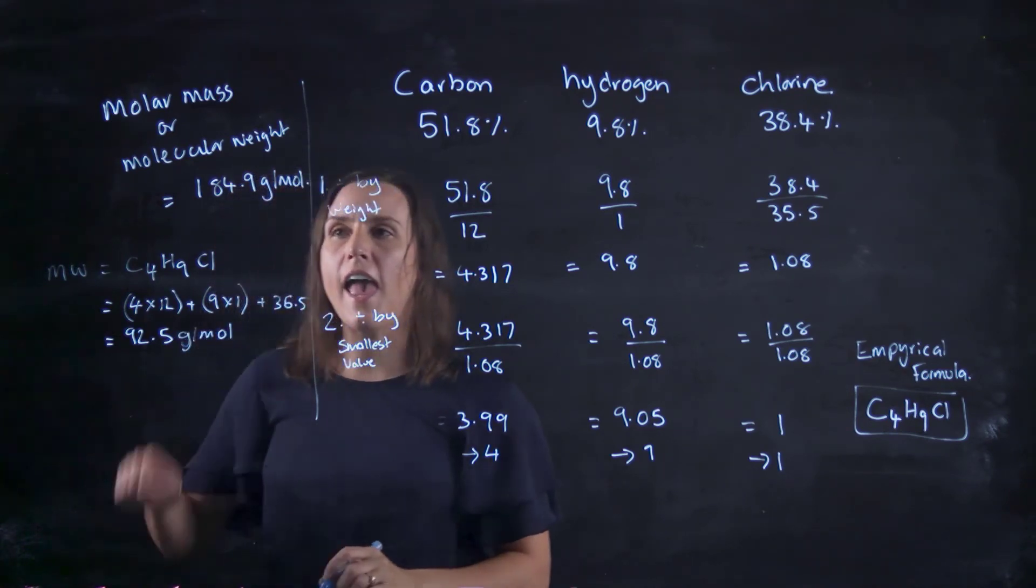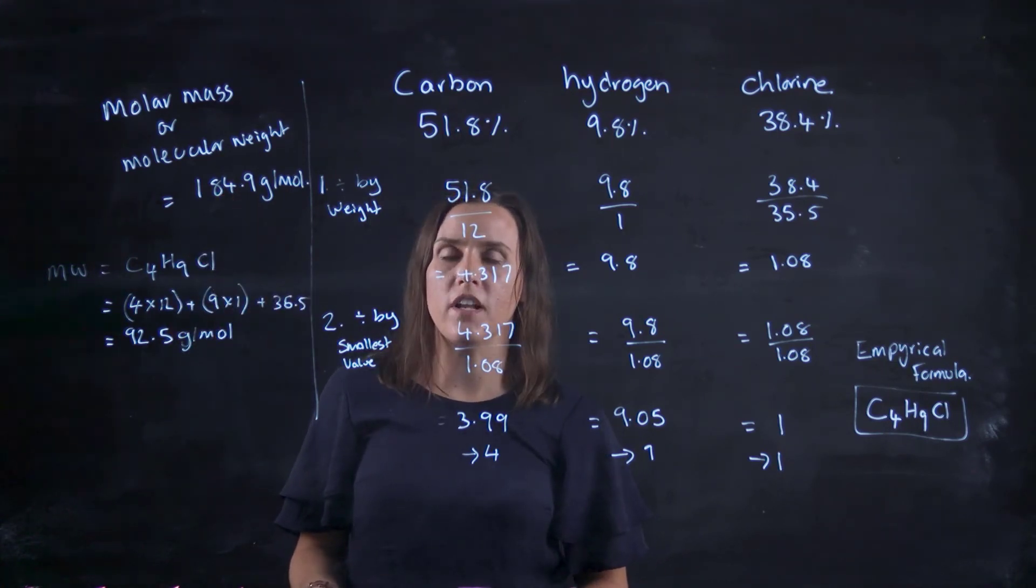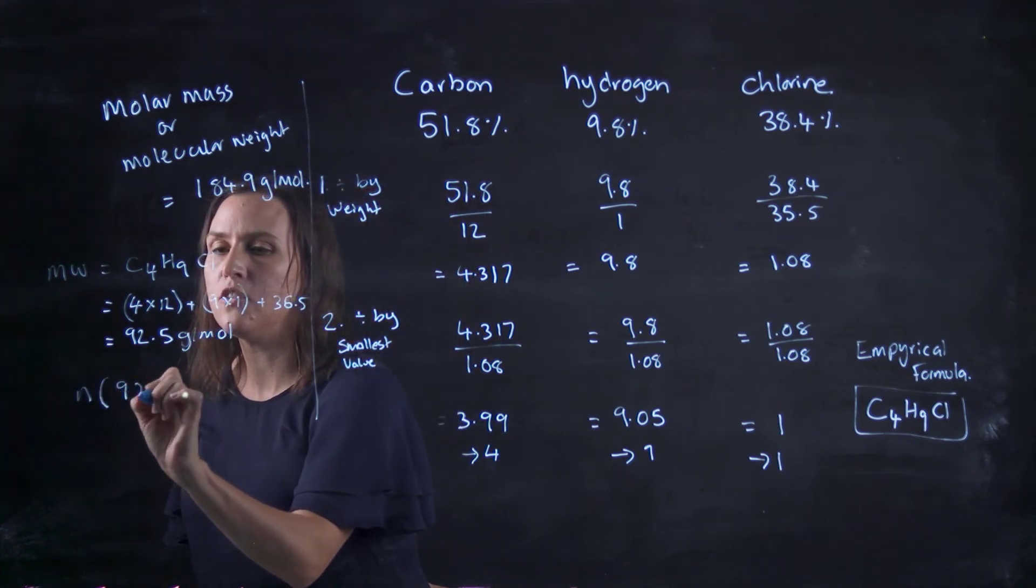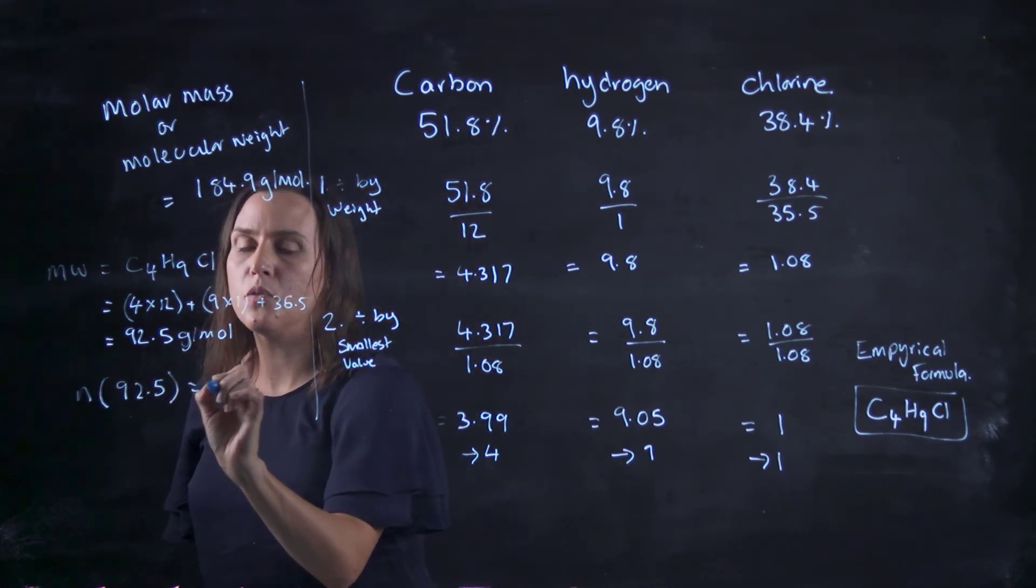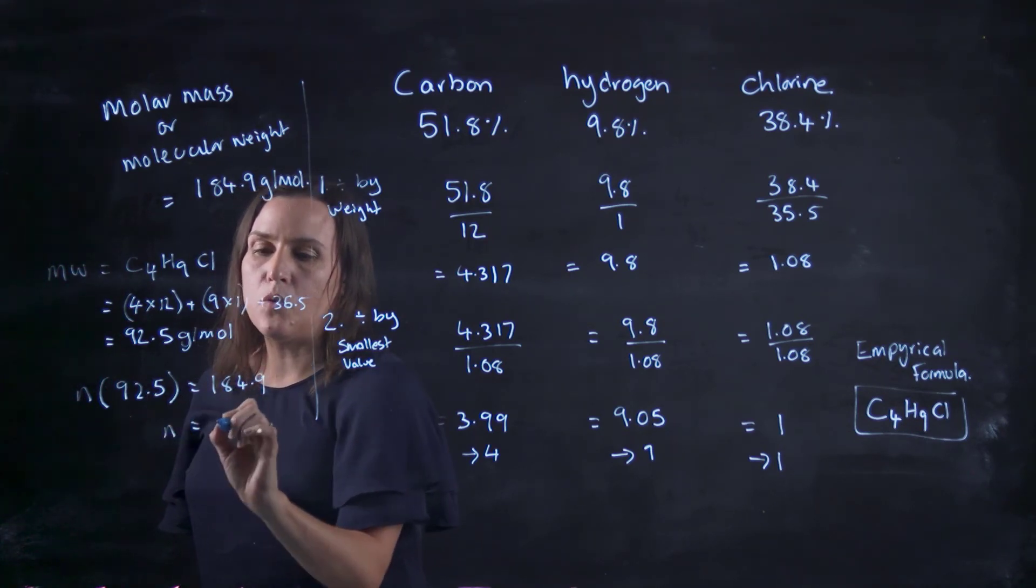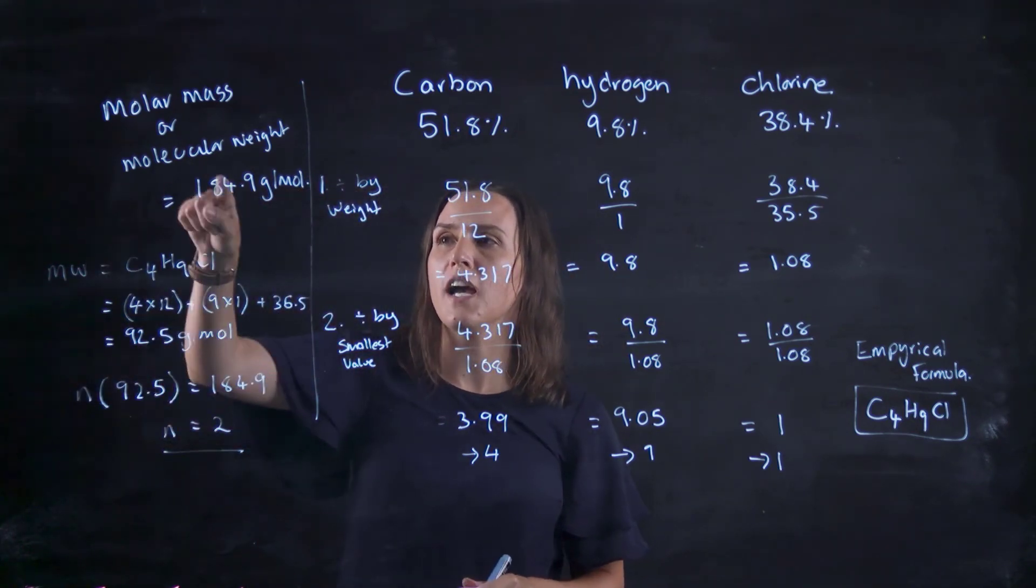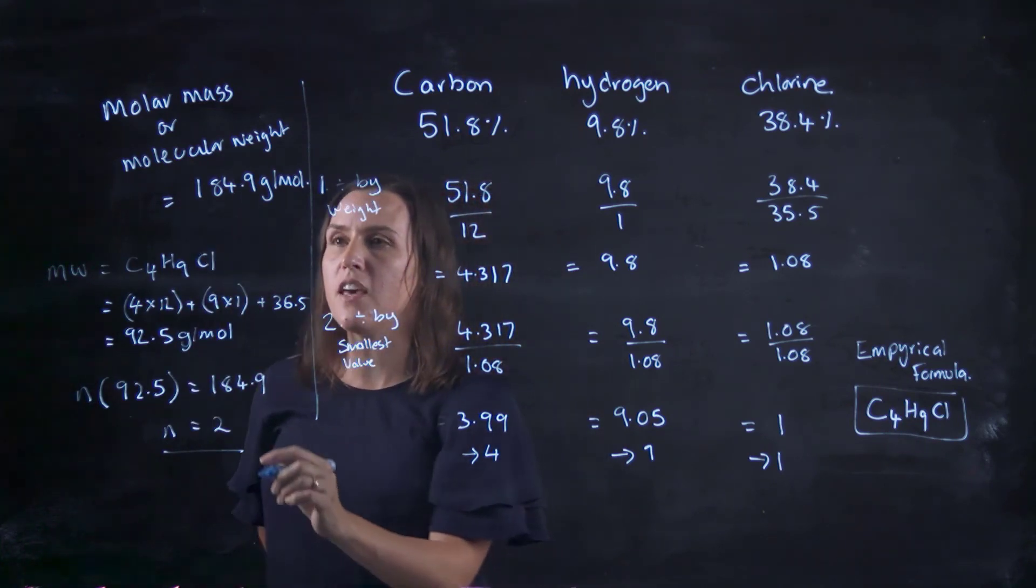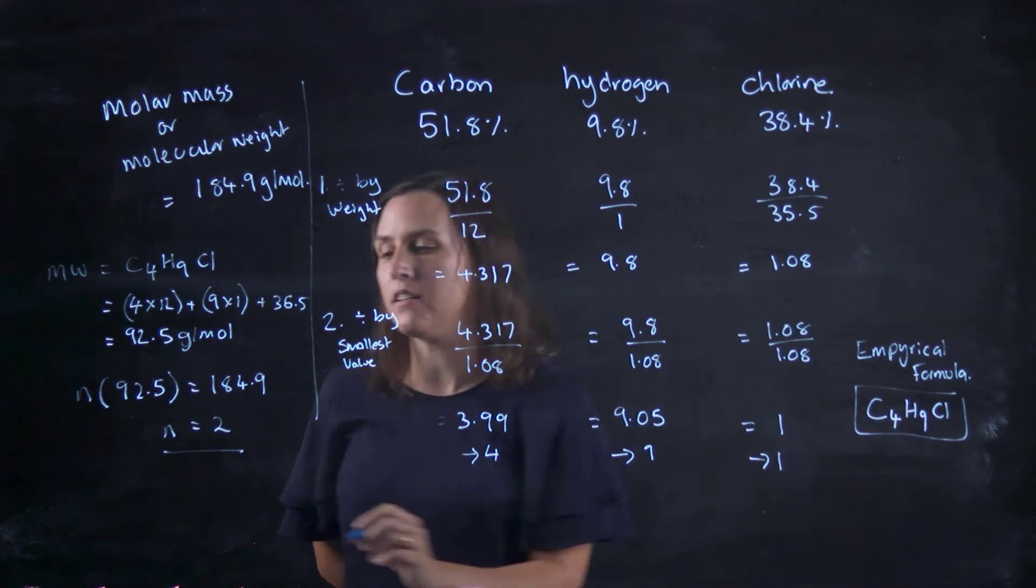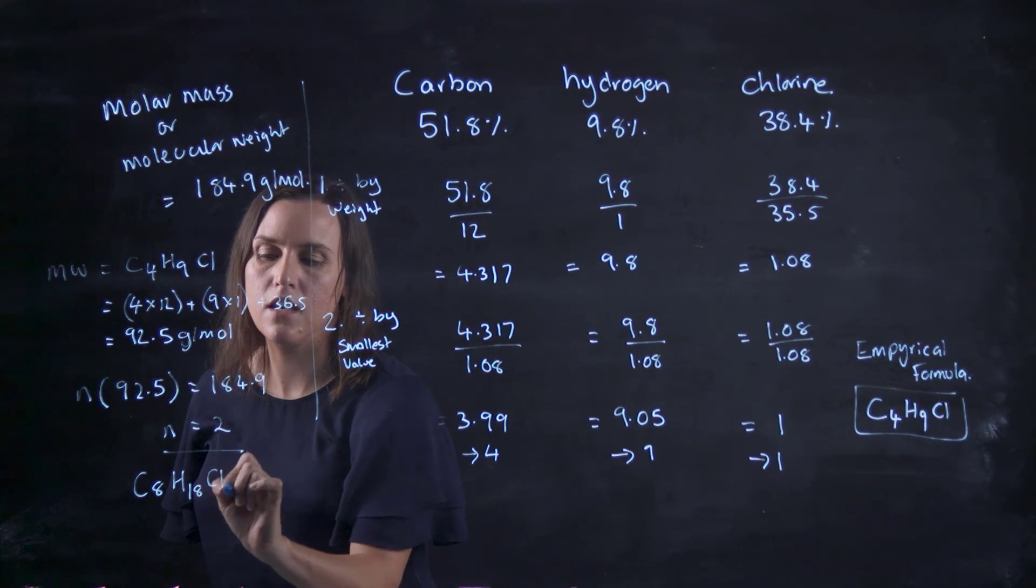So then I go, how many times can I fit 92.5 into the 184.9? So basically 185. So you can go, N times 92.5 equals 184.9. So N equals 2. So I can put 92.5 two times to get 185. So therefore the molecular formula would be double the empirical formula. So it'd be C8H18Cl2.